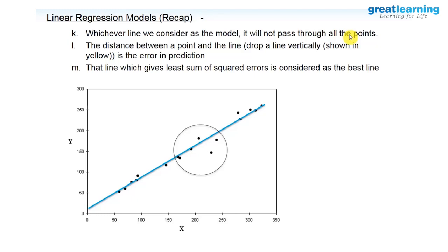In training itself, the model does errors — your models will do errors in training itself. These are the errors in the training data. Some data points will be lying above the plane, some below the plane, and some will be sitting exactly on the plane.